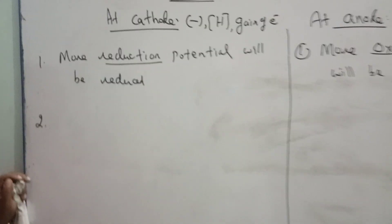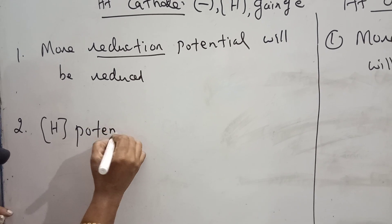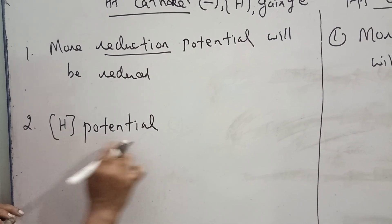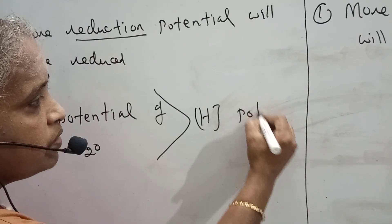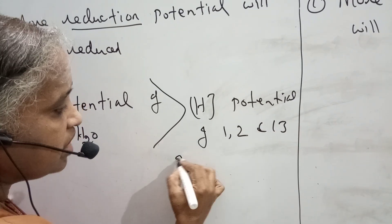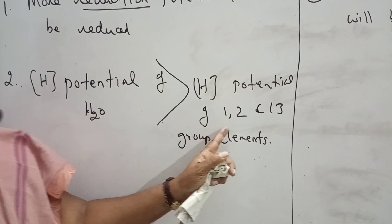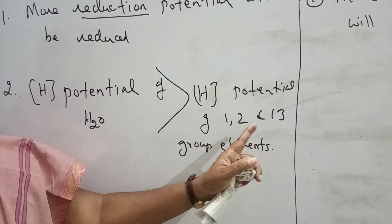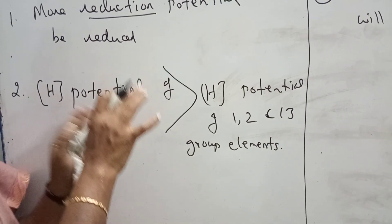The second condition is: the reduction potential of water is greater than the reduction potential of first, second, and thirteenth group elements. What are the members? Alkaline metals, alkaline earth metals, and the thirteenth group: boron, aluminium, gallium, indium, thallium. Comparing these, water is having more reduction potential, which means water will be reduced.